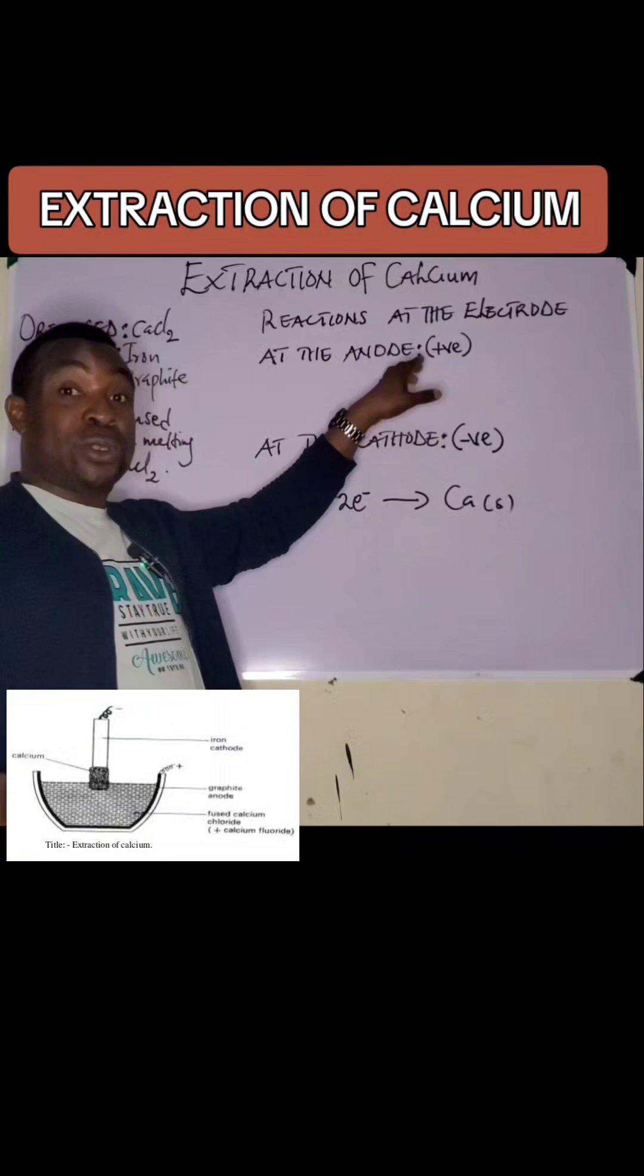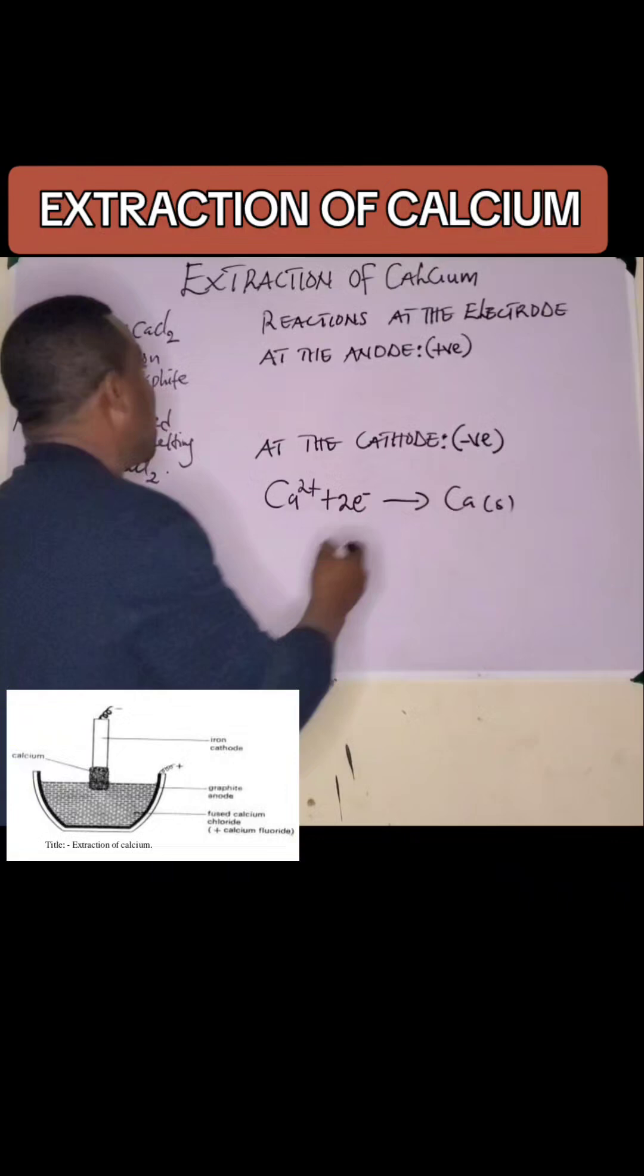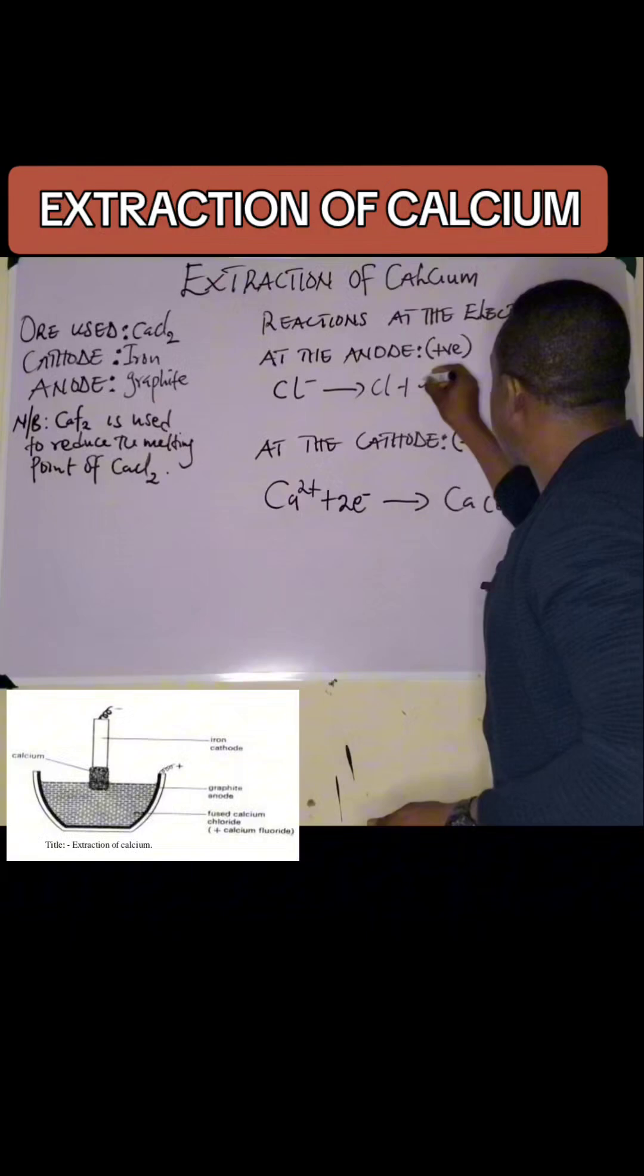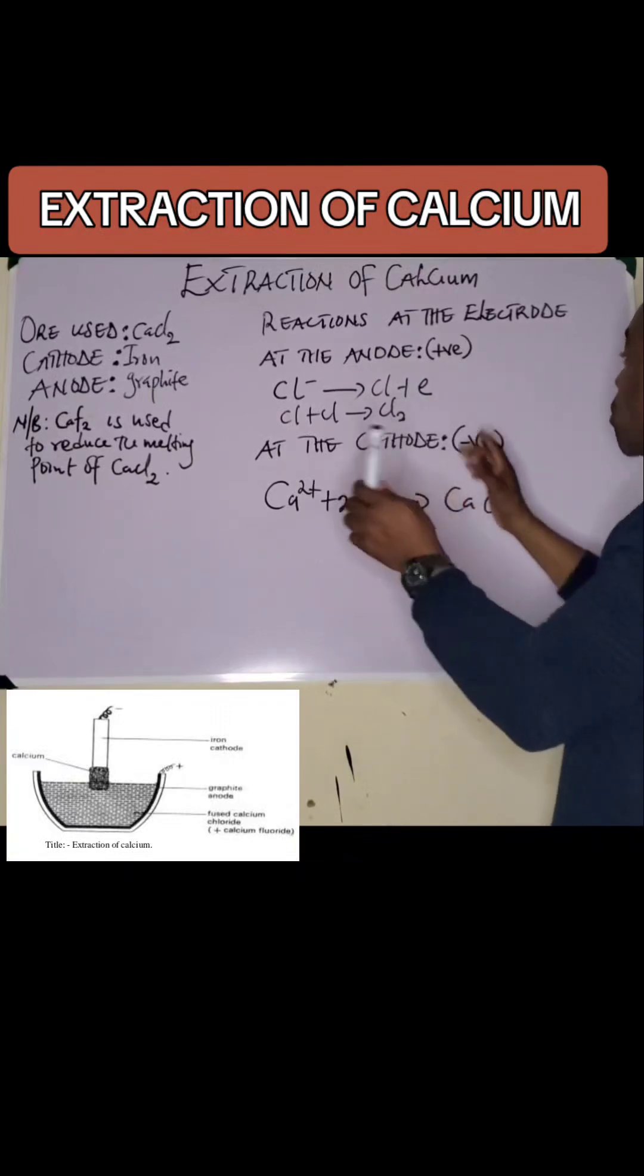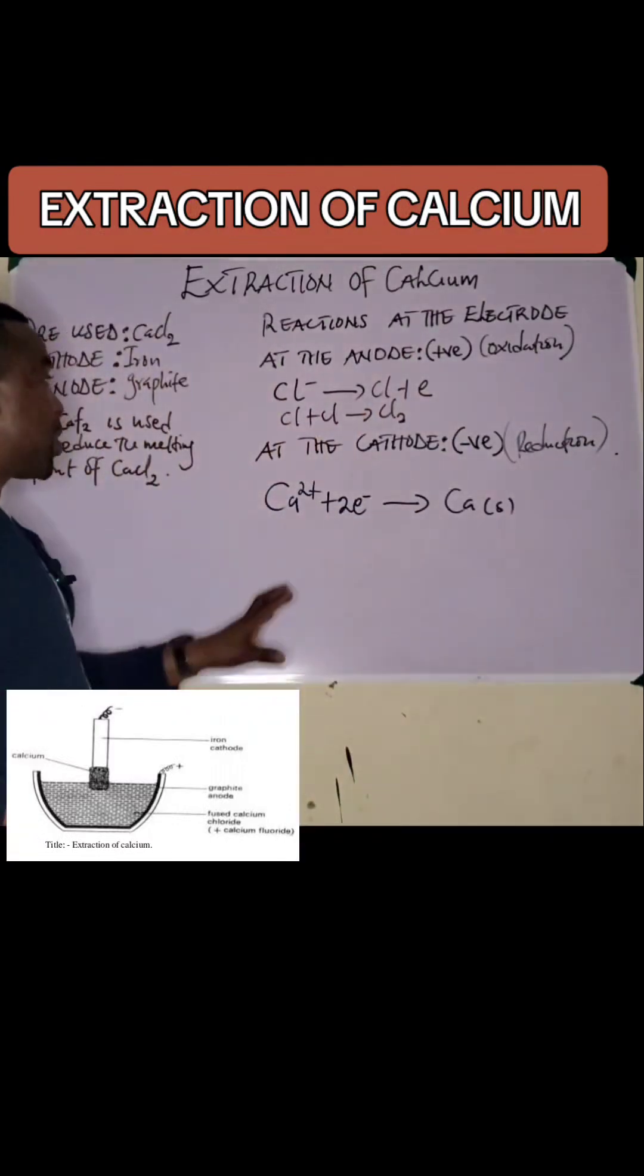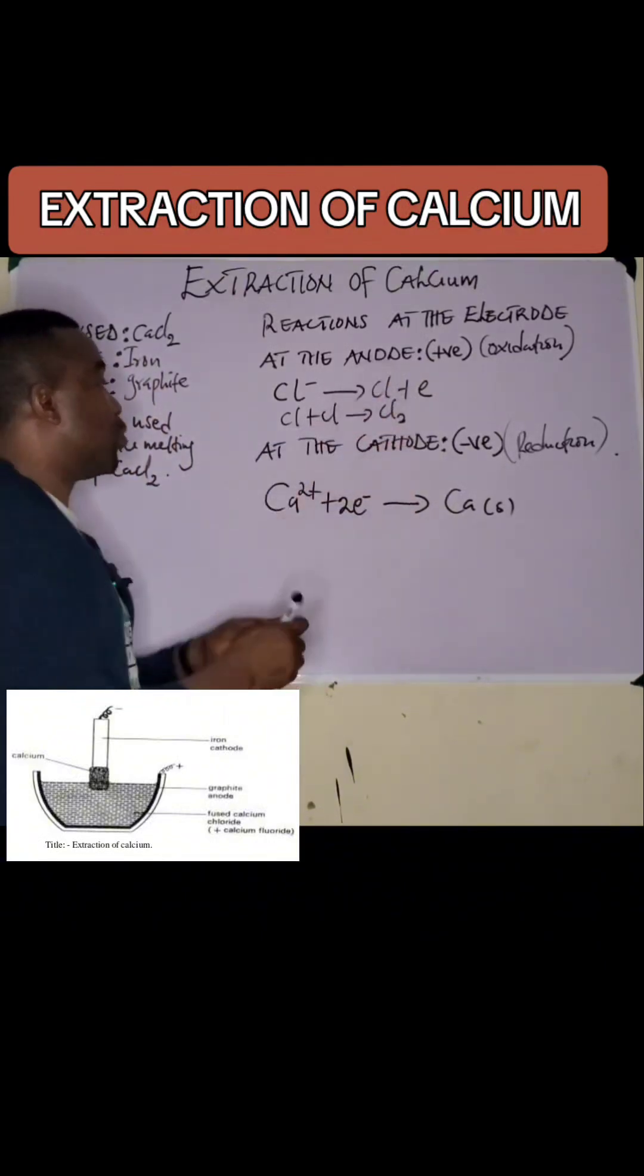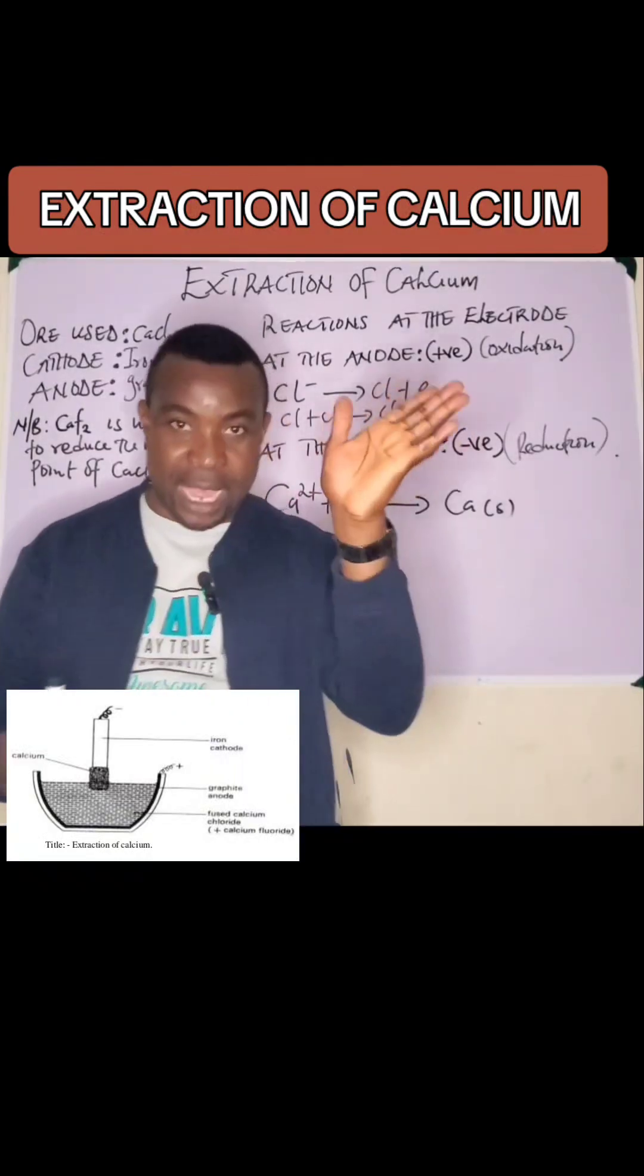The equation shows chlorine to be Cl⁻ → Cl + e⁻, and when chlorine atoms join they form chlorine molecules (Cl₂). Since chlorine has lost electrons, oxidation has occurred. Calcium is produced at the cathode while chlorine gas is produced at the anode. Thanks for watching, bye for now.